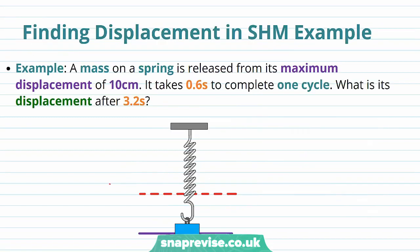Let's do a longer example of finding displacement in simple harmonic motion. For example, a mass on a spring is released from its maximum displacement of 10 centimeters. It takes 0.6 seconds to complete one cycle. What is its displacement after 3.2 seconds? So here we have our mass on a spring at its maximum displacement of 10 centimeters, and we want to find its displacement x after a time interval of 3.2 seconds. And we're also told that the time period, big T, is equal to 0.6 seconds.